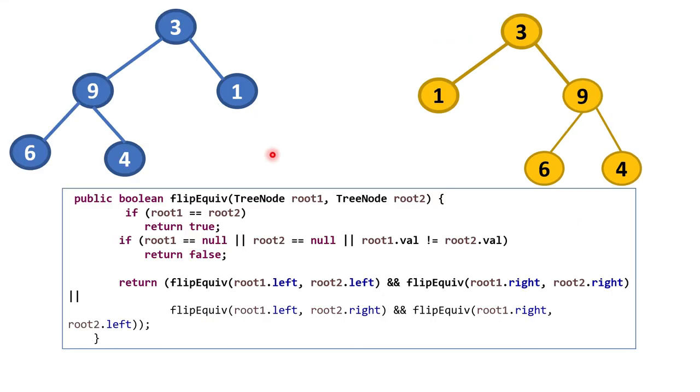Now here is the program actually. So recursively we have to solve this. Both binary trees are present. Flip equivalent function we have to write. There will pass both the node root1 and root2. First thing what we will check, if they are both equal, means object-wise if both are equal, then we simply return true. If one of them is null or their value is not matching, then we will return false.